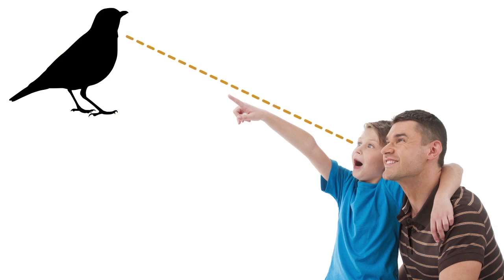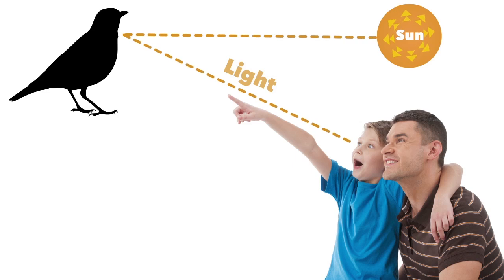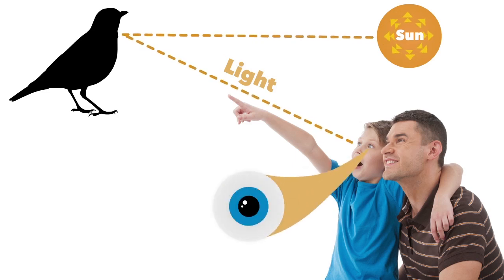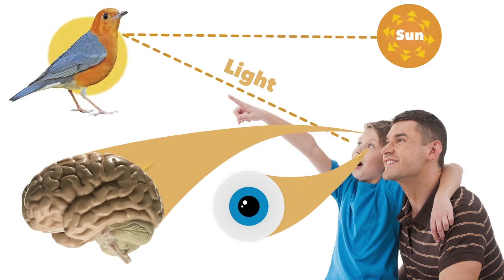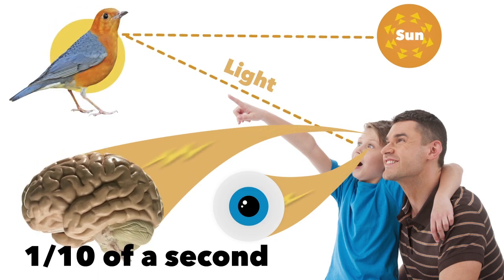When you look at something, what you're really seeing is light. Specifically, light from the sun or a light bulb bounces off whatever you're looking at and enters into your eye. The light is then converted to electrical signals that your brain can turn into an image. This process takes about one tenth of a second.